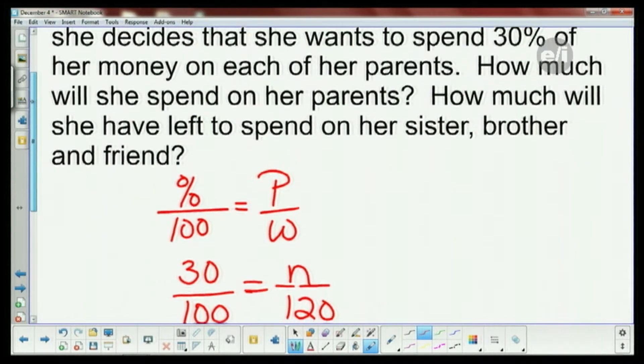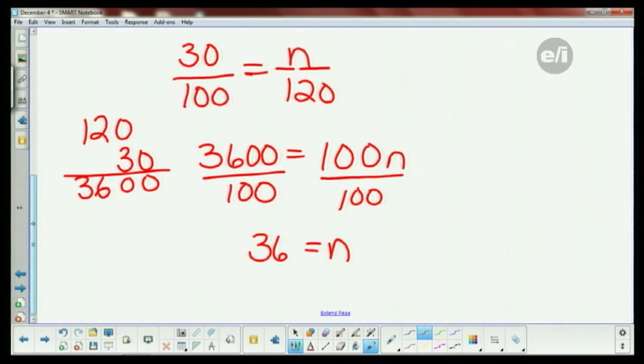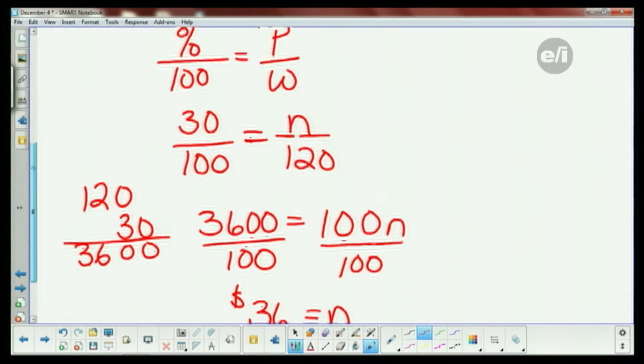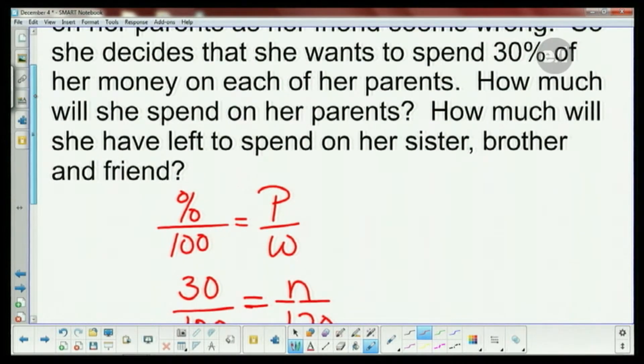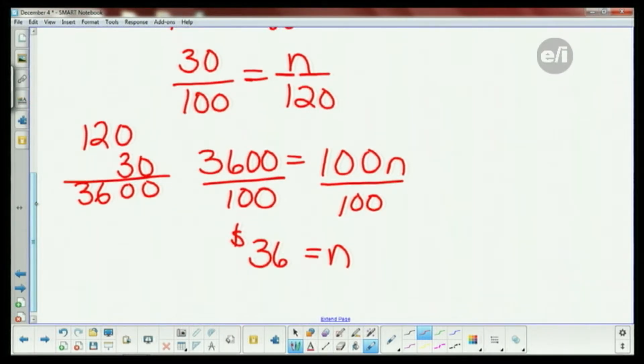How much will she spend on her parents? She's spending 30% on each of her parents, so you've got $36 on mom and $36 on dad. She is spending $72 on mom and dad.